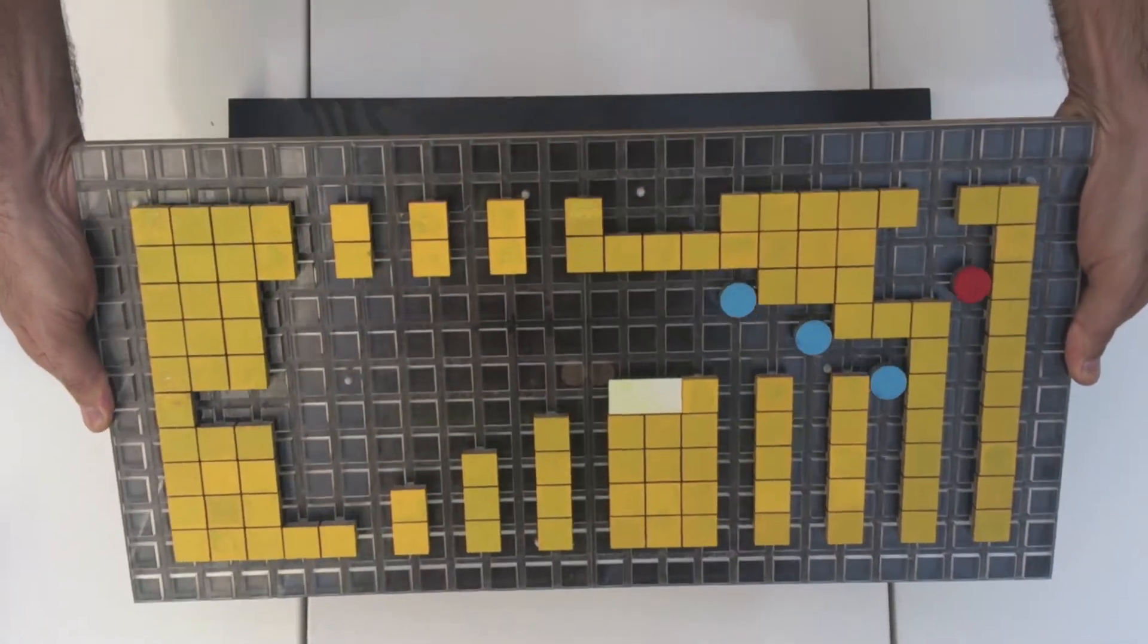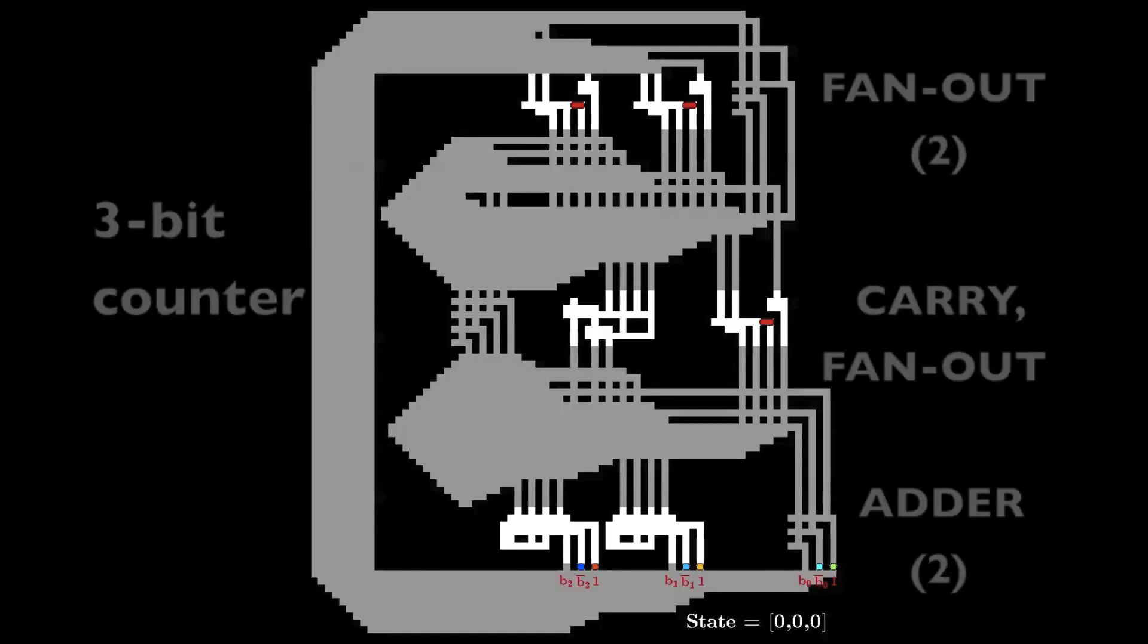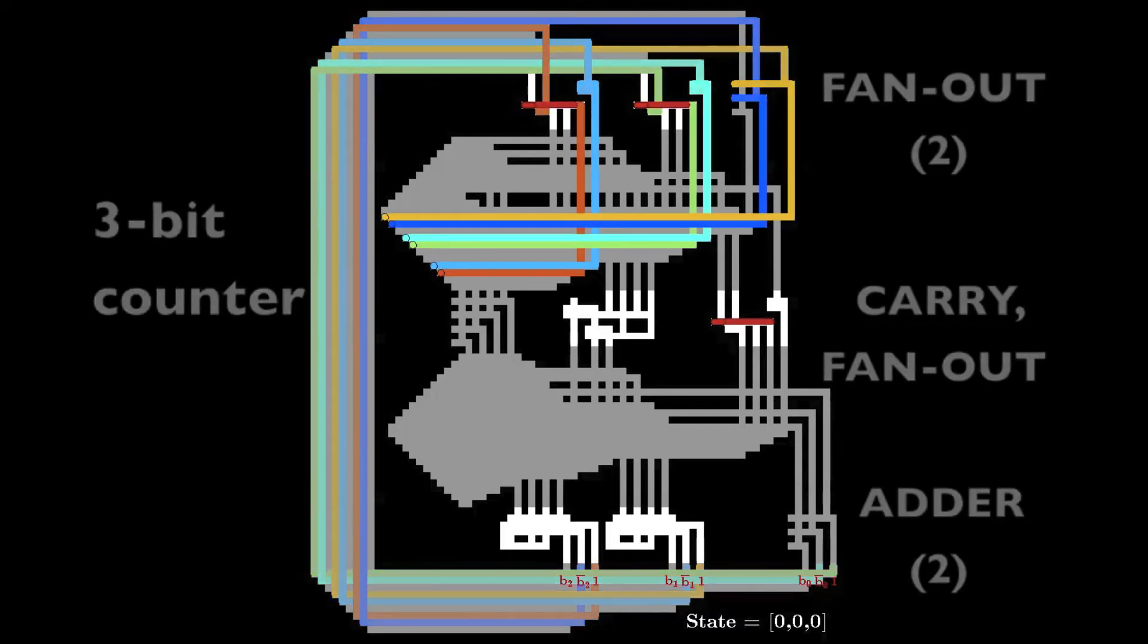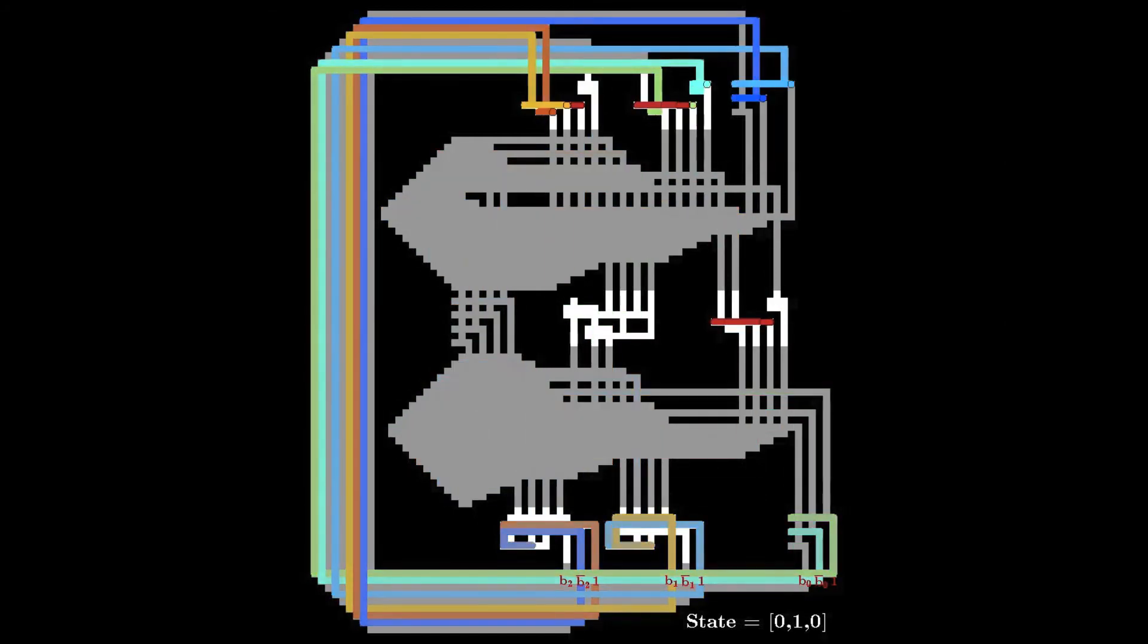This counter requires 3 fan-out gates, 2 adders, and 1 gate for the carry. Our paper gives instructions for wiring logic gates together, and explains how all gates and wiring are actuated by the same clockwise sequence of commands.